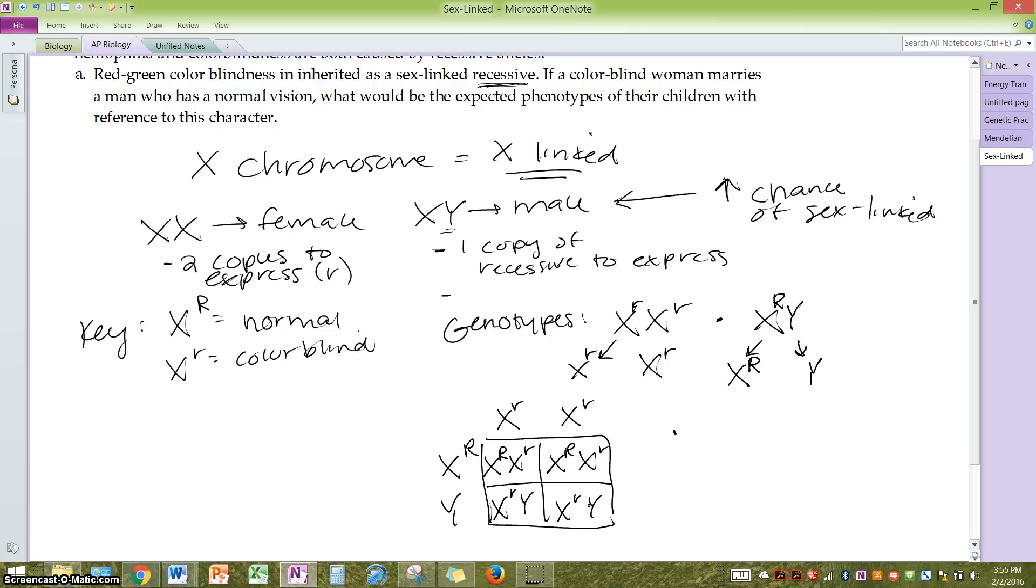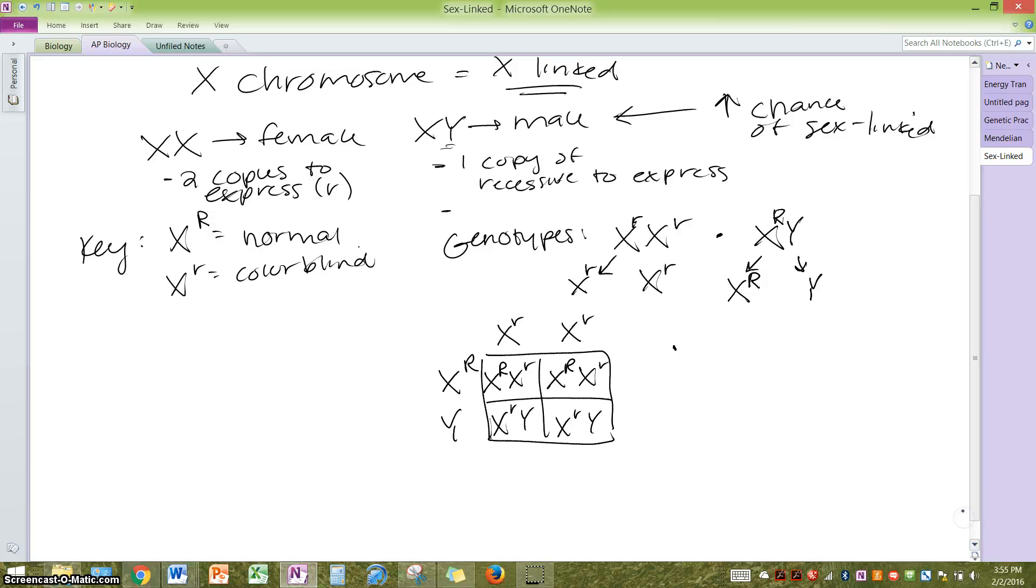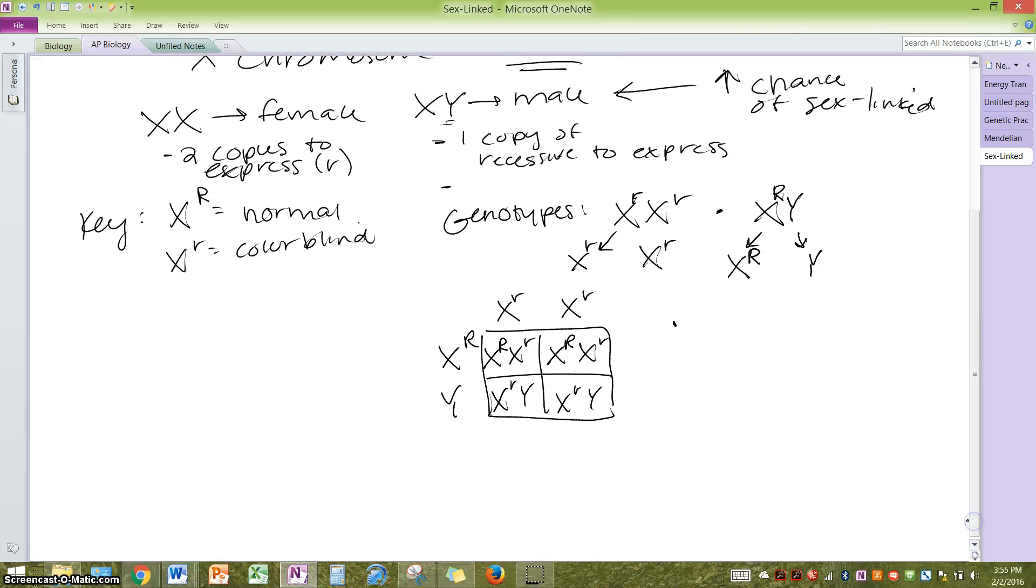And then what would be the expected phenotypes of the children? So let's get a nice ratio going for this. It's important to include in your ratio the sexes of the individuals because the sex does matter. If I look at the females, females actually happen to be expressing the same thing. They both have one of the dominant alleles, so they're going to have normal vision. So one normal female to every...